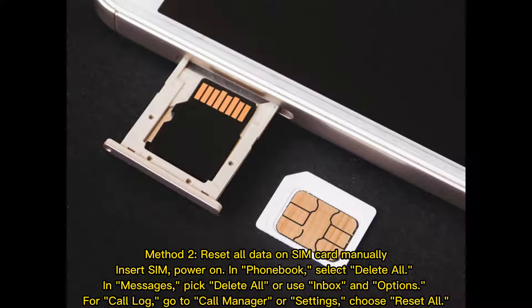Method 2: Reset all data on SIM card manually. Insert SIM and power on. In Phonebook, select Delete All. In Messages, pick Delete All or use Inbox and Options. For call log, go to Call Manager or Settings and choose Reset All.